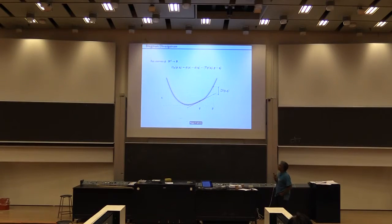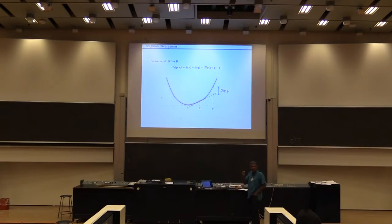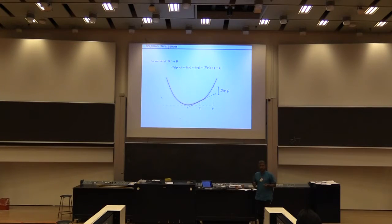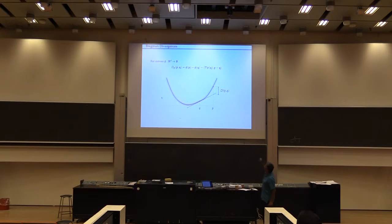Let's start with Bregman divergences. They're defined in a kind of natural way, and they're parameterized. The idea is you give me a convex function phi, and I'll give you a distance function parameterized by phi. So given any convex function phi, you define D_phi(P, Q) as this function: you look at what would happen if you approximated the convex function phi by its first-order approximation at Q.